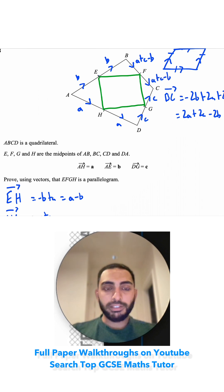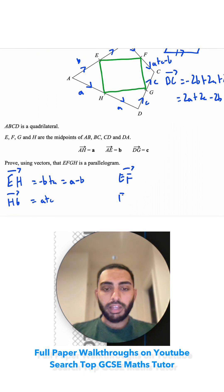Now the two vectors I need to find—I already did EH and HG—are EF and FG.